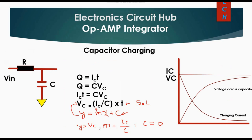Before we understand the working of the op-amp integrator, we will look at capacitor charging behavior. The charge stored at a capacitor is Q = IC × T, where IC is the charging current. Also, Q = C × VC, where VC is the voltage across the capacitor. Applying equivalence: IC × T = C × VC.